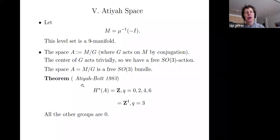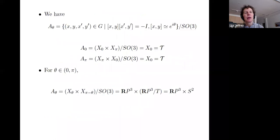So, Atiyah and Bott found the Betti numbers. They are Z in even dimensions, 0, 2, 4, 6. And there are Z^4 for q equals 3, the middle dimension. All the other groups are 0.